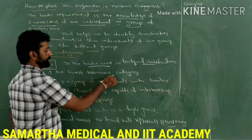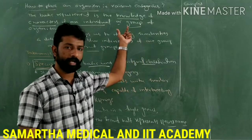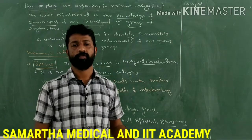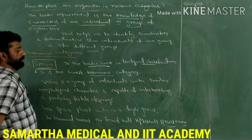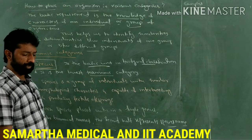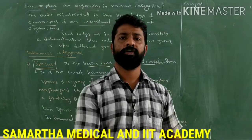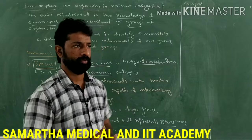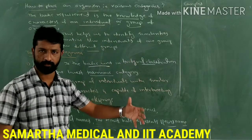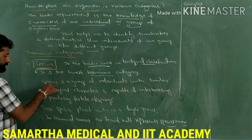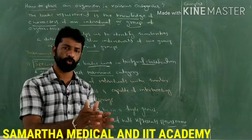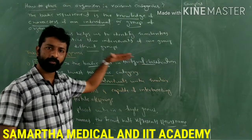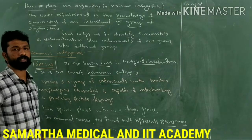Species is the lowest category among taxonomic categories. How can you define species? Species is a group of individuals with similar morphological characters. Morphological means characters that can be observed externally — visible or observable characters that are similar to each other. Such a group of individuals forms a species. That is the first part of the definition.